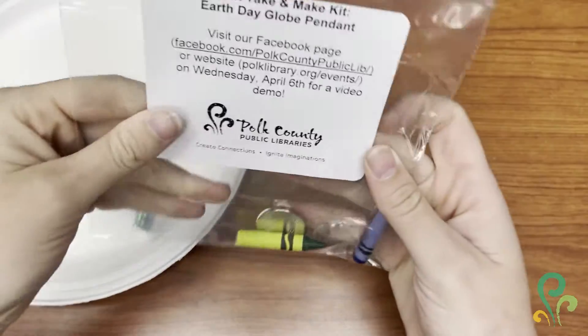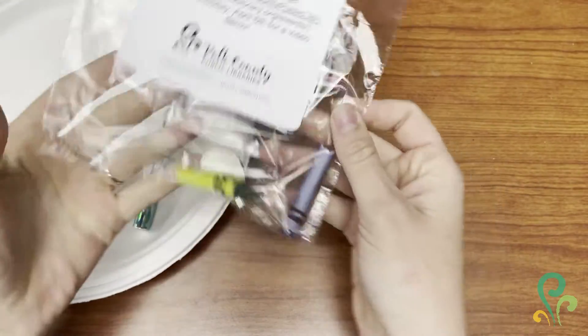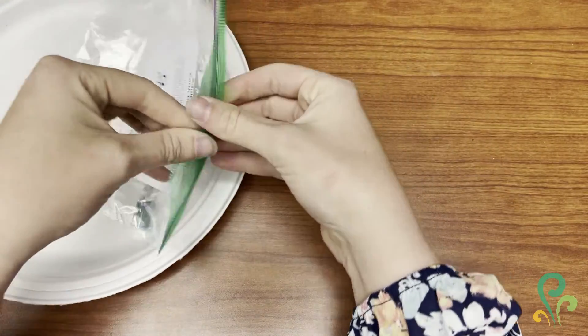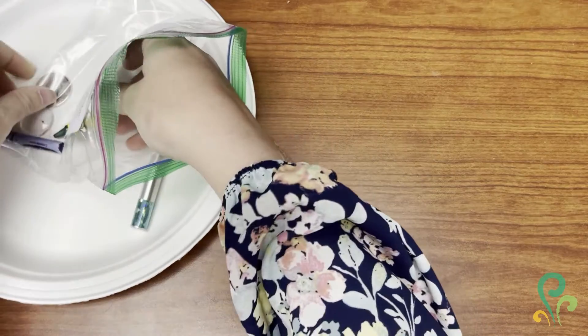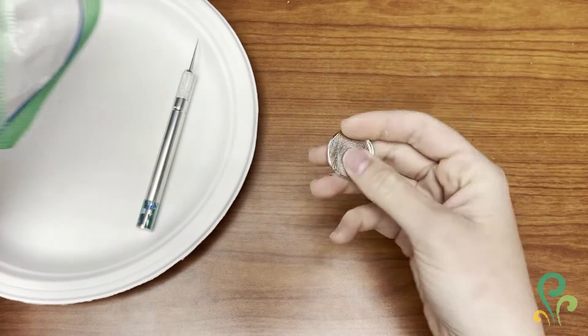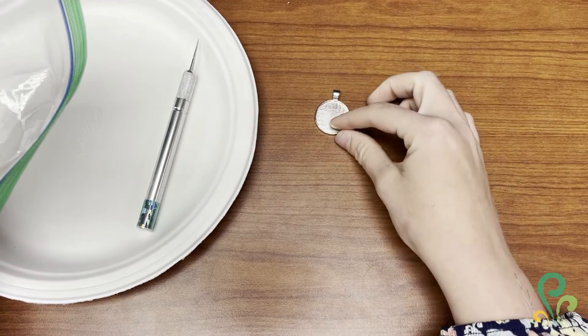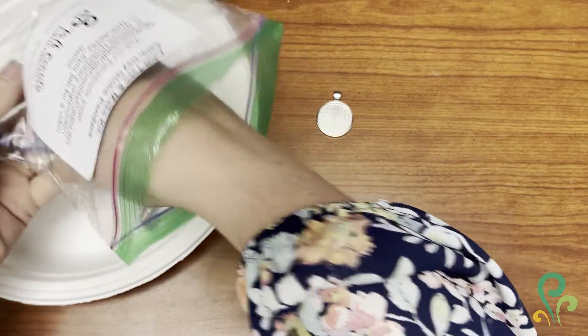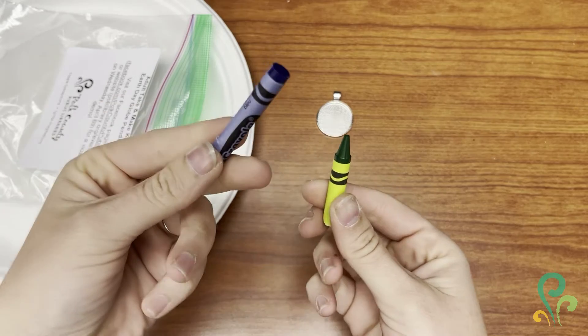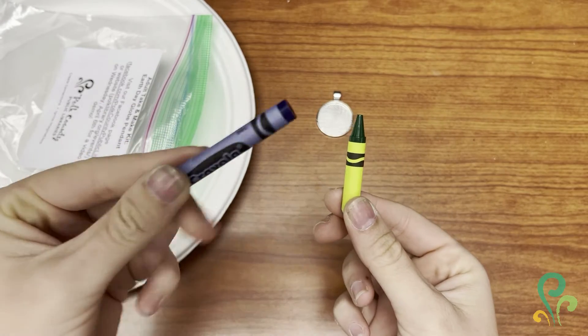Inside your adult take and make kit for this month, you have a couple of different items. Go ahead and pull this out to make sure you have everything you need. You should have your base of your necklace and half of a blue crayon and half of a green crayon. This is going to be the ocean on your earth pendant and this is going to be the land.